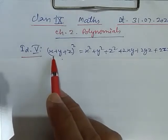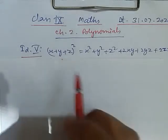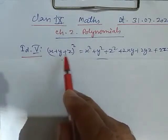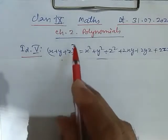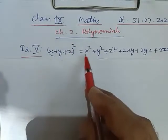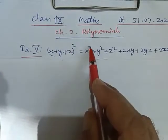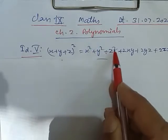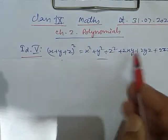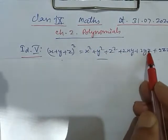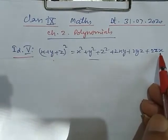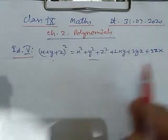This is our fifth identity. The fifth identity is x plus y plus z whole square equals x squared plus y squared plus z squared plus twice xy plus twice yz plus twice zx. This is our fifth identity.